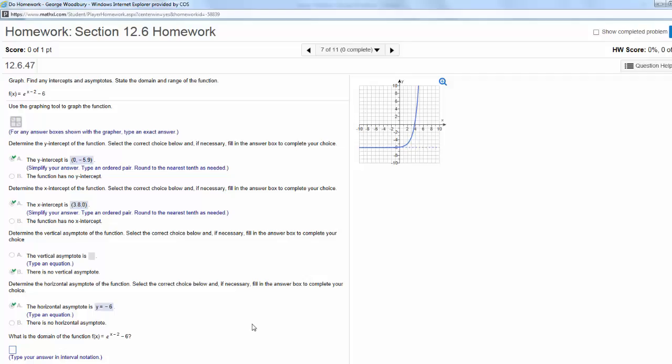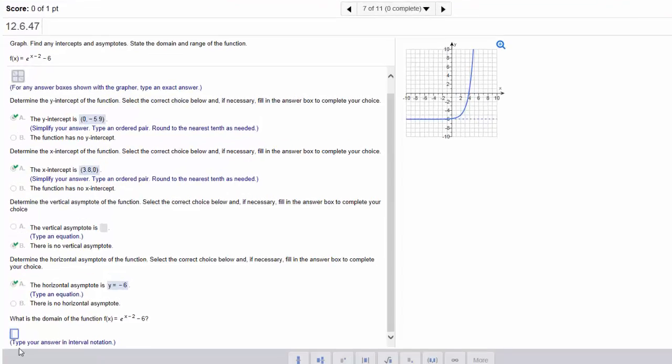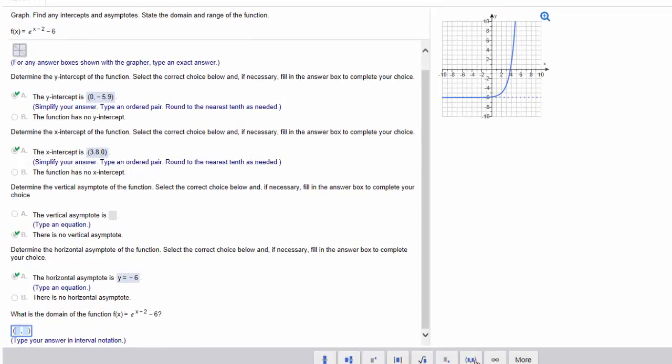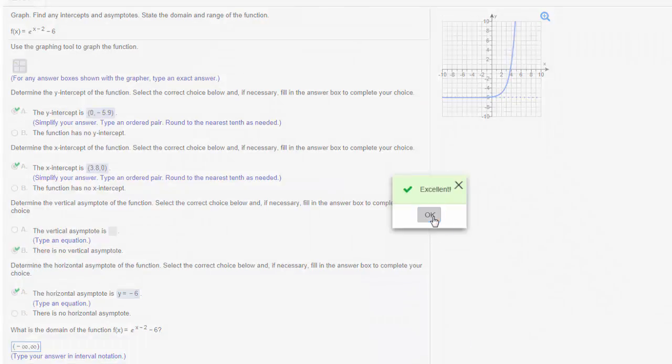Finally, I need the domain and the range. Remember, for an exponential function, that's all real numbers. So I get an ordered pair, negative infinity, comma, infinity. I'm not sure why that's disappearing on me. There we go. Check answer. Excellent.